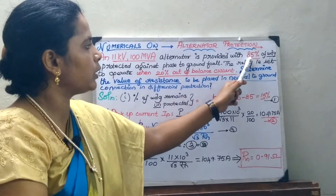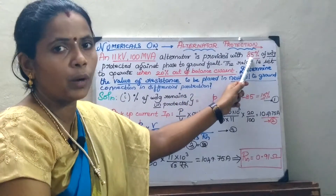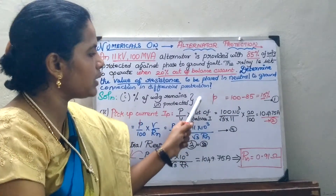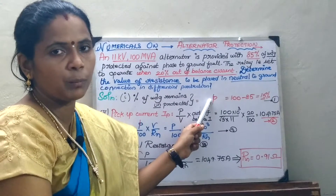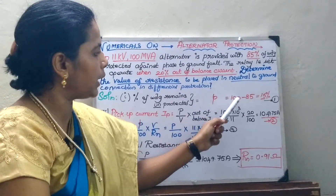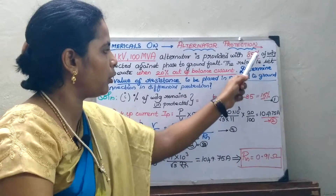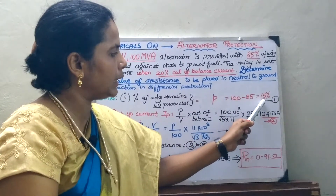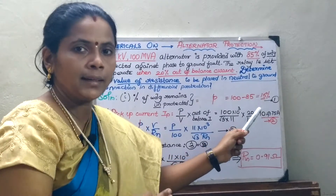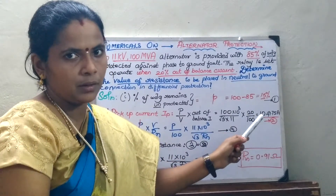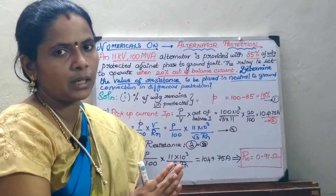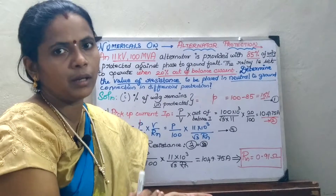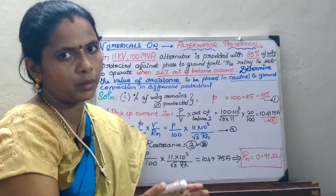The first thing: with 85 percentage of the winding protected, we need to find out the percentage of the winding that remains unprotected, specified by P. It is nothing but 100 minus however much of the winding remains protected. So 100 minus 85 gives 15 percentage of the winding that remains unprotected. Subtract the protected percentage from 100 to get the unprotected percentage.